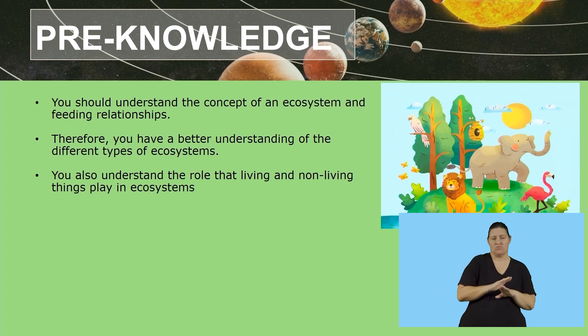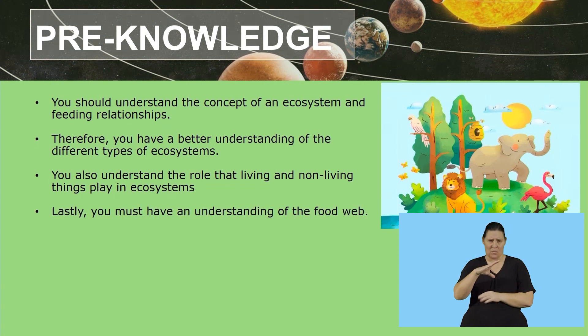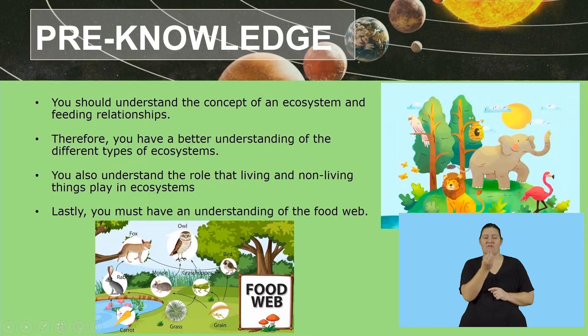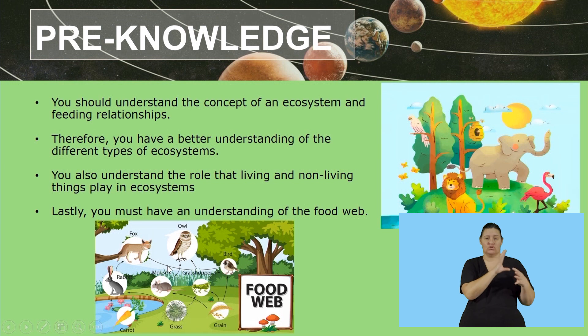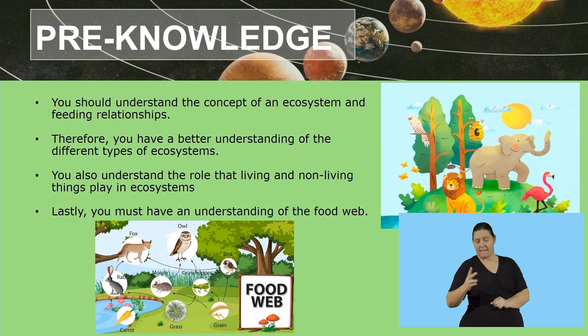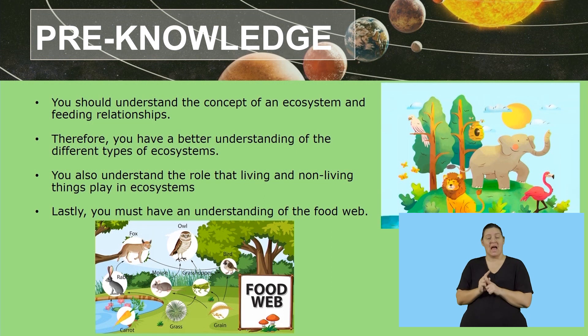You should also understand the role of living and non-living things in an ecosystem. Lastly, you must have an understanding of what a food web is. Here's a picture showing an example of a food web. A food chain tells us how energy is transferred from one organism to the next, whereas a food web is a combination of multiple food chains.